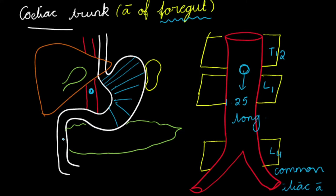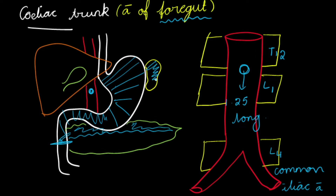The celiac trunk supply extends up to the second part of the duodenum, specifically at the location of the opening of the common bile duct. It also supplies the upper part of the pancreas, the spleen, the liver, and the gallbladder.